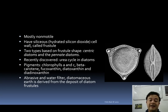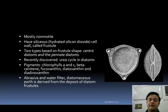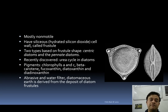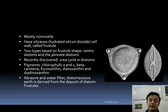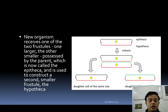Diatoms have a large number of commercial applications, including water filtration. In RO systems and industrial water purification, sand filters are used — and that sand is typically diatomaceous earth. Diatomaceous earth is also used as an abrasive, such as in sandpaper, for polishing surfaces and removing rust.